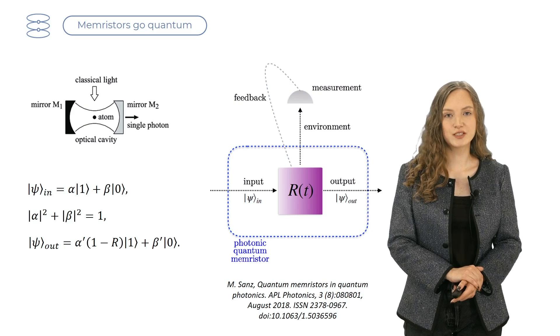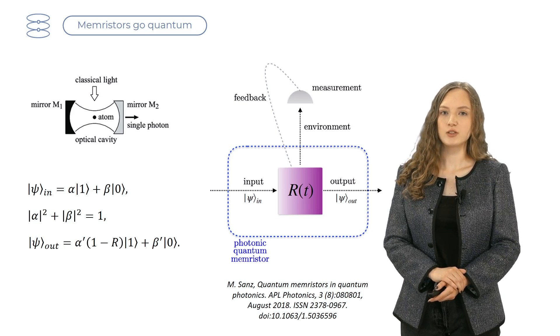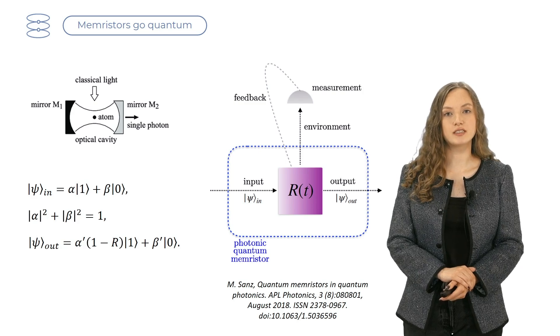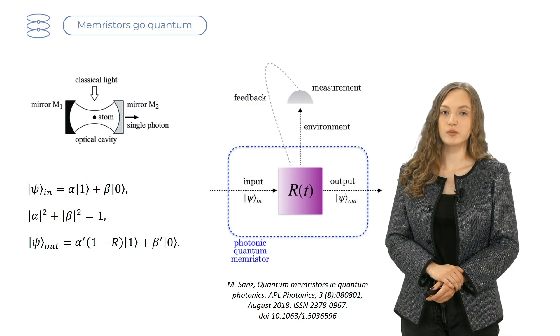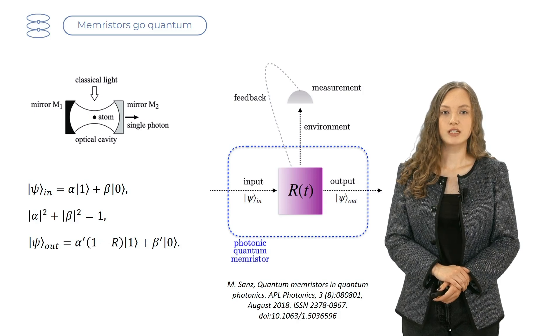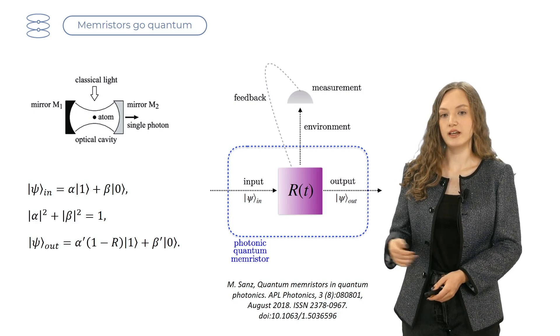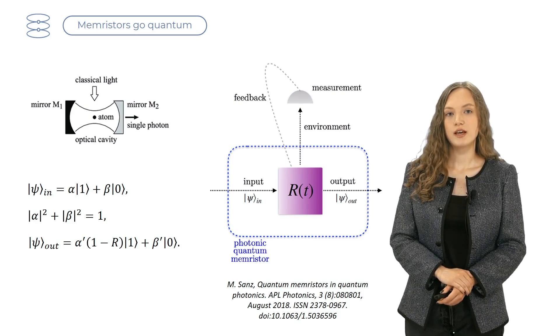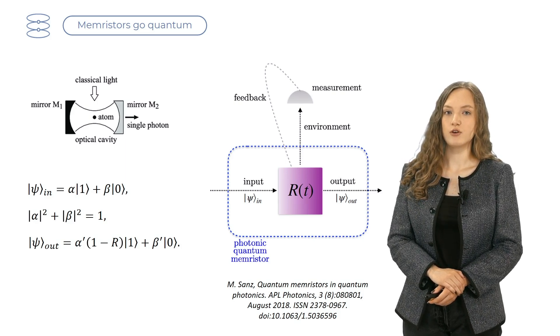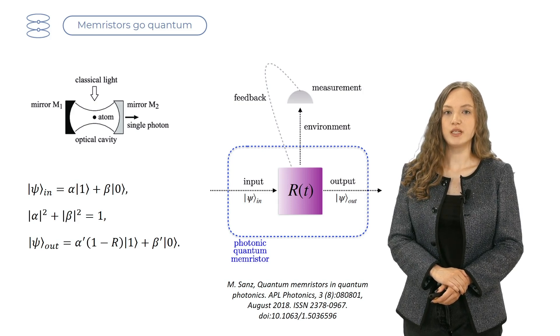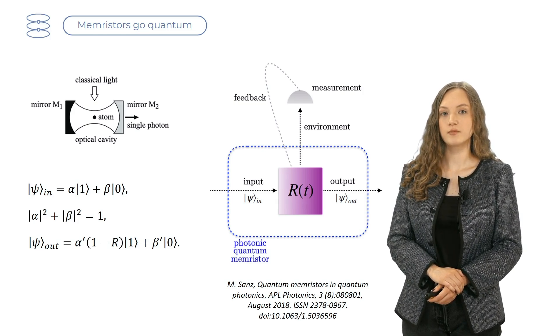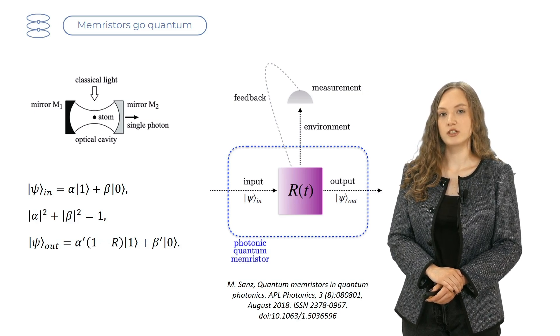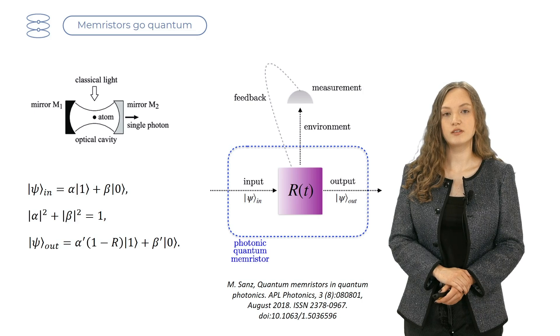Now back to quantum memristors. A quantum memristor based on quantum photonics was first proposed in 2018 by Sanz and colleagues. It uses a tunable beam splitter, a device that reflects photons with a certain probability r. There is also a single photon source, and similarly to the decay of a radioactive atom, the process of emitting a photon is probabilistic. Hence, what's being emitted is a superposition of a single photon and a vacuum state.